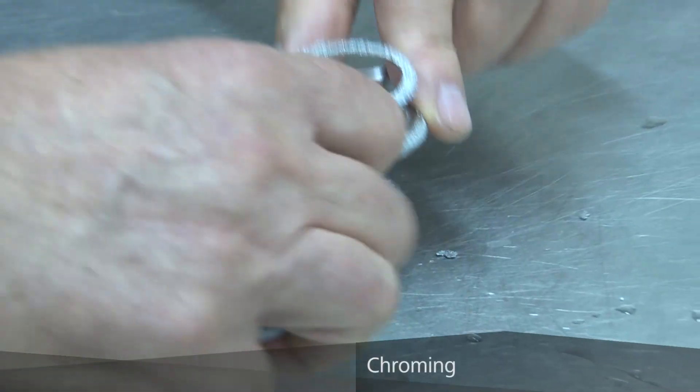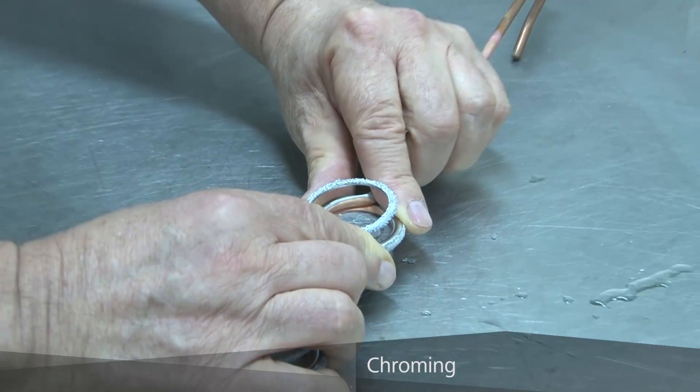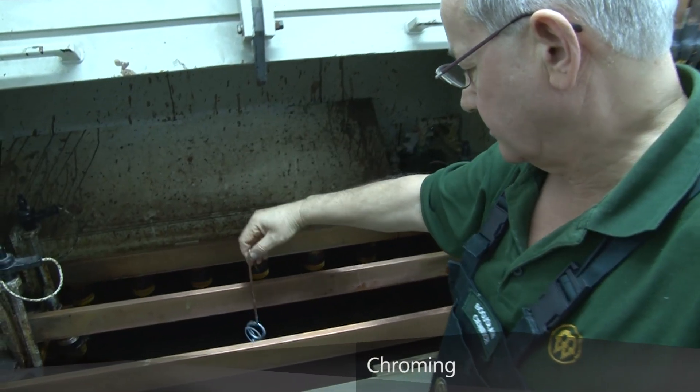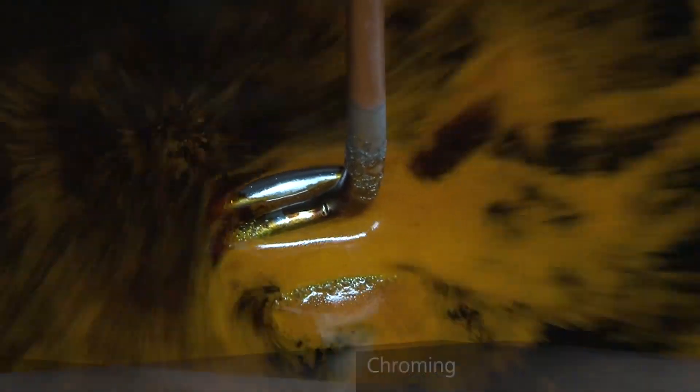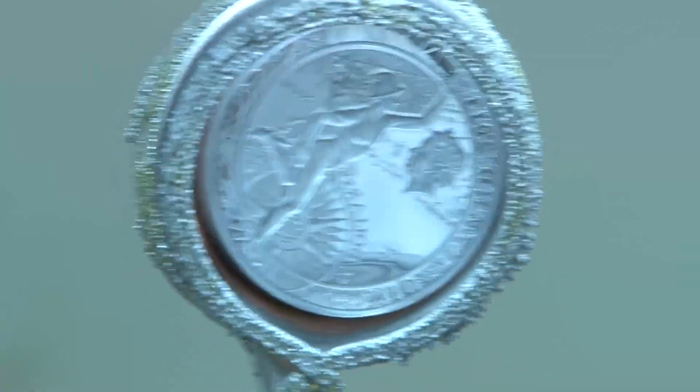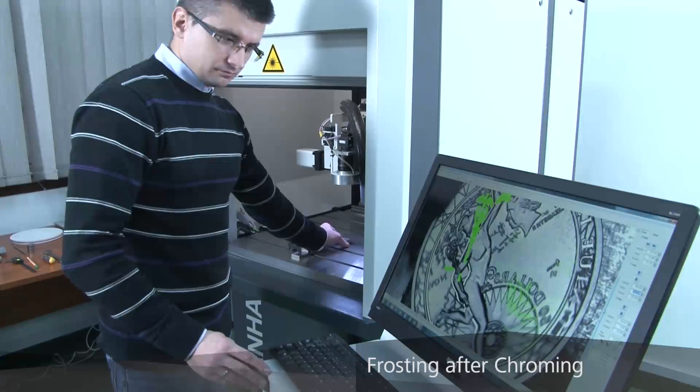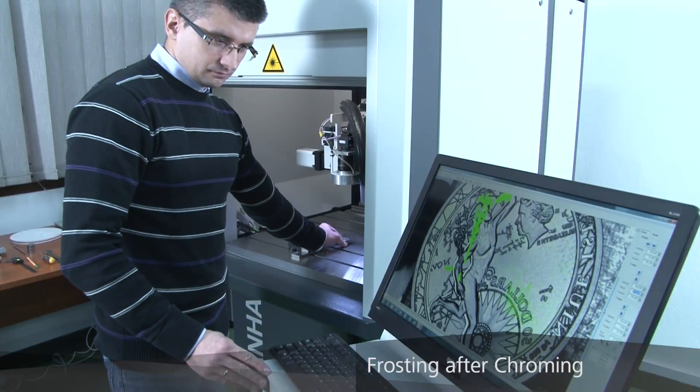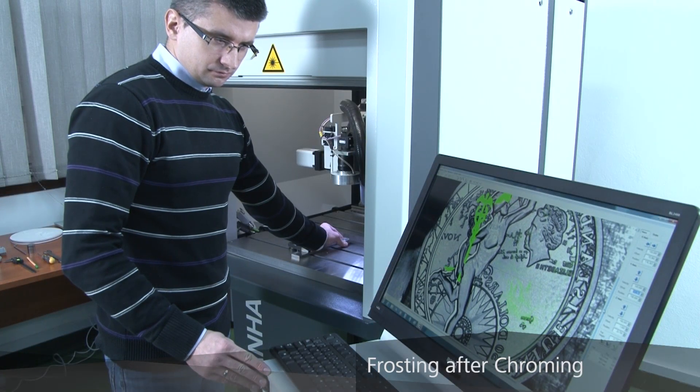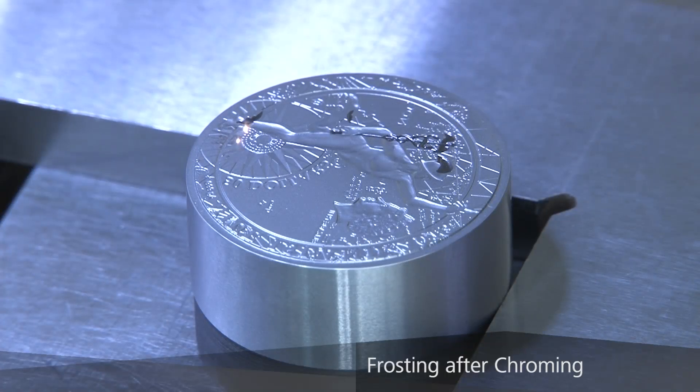After chroming in the electroplating bath, some working surfaces of the dies are frosted again. The result of frosting after chroming shows a completely new optical effect.